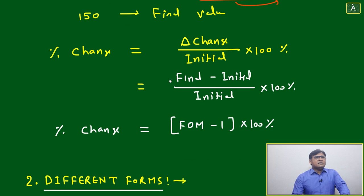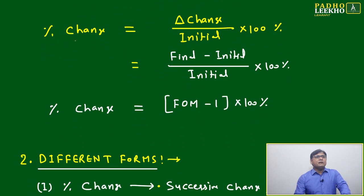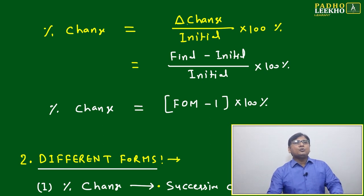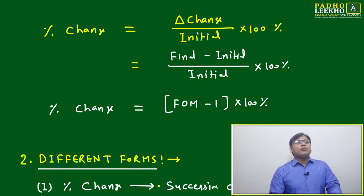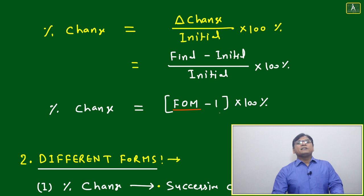We can put it in a simple formula way. Percentage change is equal to delta change divided by initial times 100%, or you can say final minus initial divided by initial times 100%, or we can write in the form of factor multiplication minus 1 times 100%.